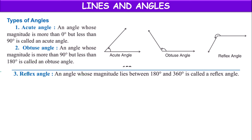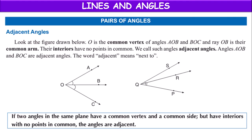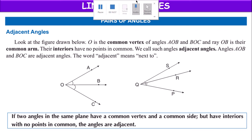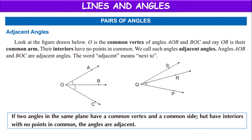So mainly we have three types of angles: acute angle, obtuse angle, and reflex angle. Next, in pair of angles, our next concept is adjacent angles.